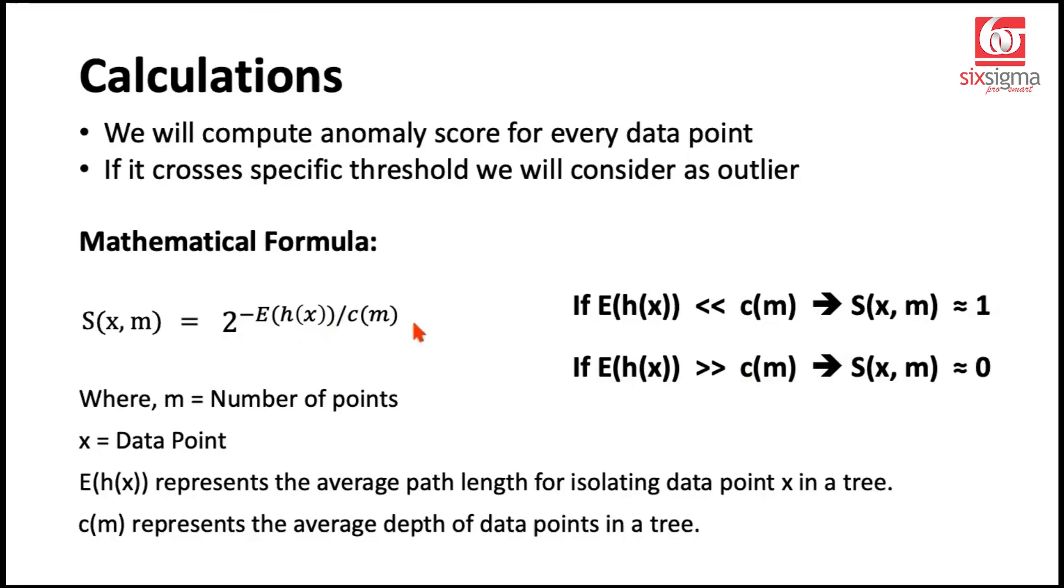In a way, you can write it as 1 by 2 raised to a pretty high power. When a fraction is raised to a very high power, it will always tend to 0. And when this E(h(x)) is equal to c(m), these two values are equal, which simply means that the depth at which an anomaly is found is the same as that of a normal data point. Of course, in this case, the score that we'll get would be 0.5. Generally, if the anomaly score for a data point is greater than 0.5, we will consider it an anomaly. The closer to 1 it is, the stronger the anomaly. The closer to 0, it's more likely to be a very normal data point. In fact, anything less than 0.5 would generally be treated as a normal data point.